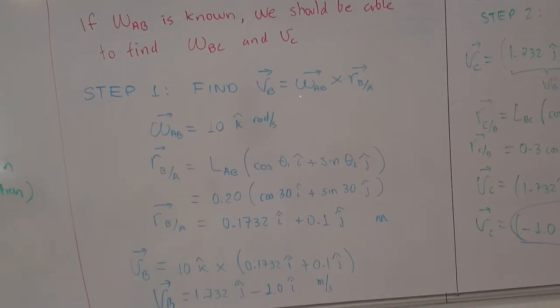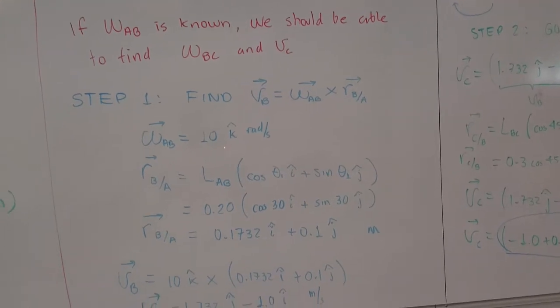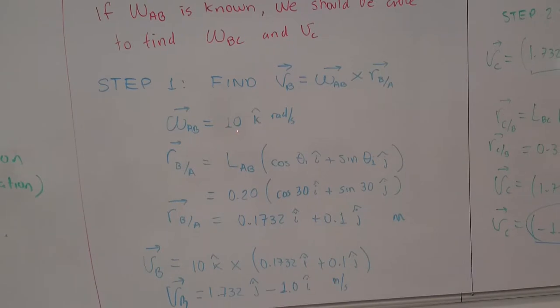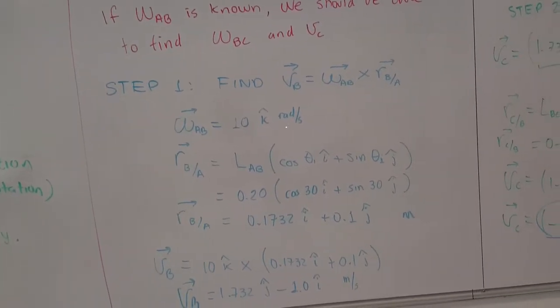We will apply the relative velocity equation expressed here in the vector form. Expressing what we know, the angular velocity of bar AB as a vector in 10k radians per second.